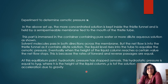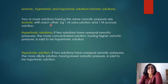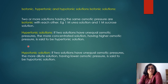The pressure applied on the solution to stop osmosis is called osmotic pressure, represented by π. If two or more solutions have the same osmotic pressure they are called isotonic. If two solutions have unequal osmotic pressure, the more concentrated one with higher osmotic pressure is called hypertonic, and the solution with lower osmotic pressure is called hypotonic.